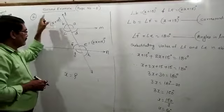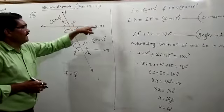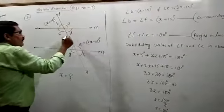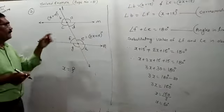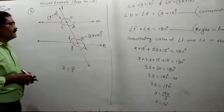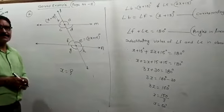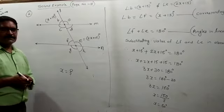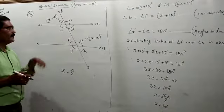Line L is the transversal which intersects line M and line L at two distinct points — this is one point and this is another point. Angle B is equal to x plus 15 degrees and angle E is equal to 2x plus 15 degrees is given. You have to find out the value of x.